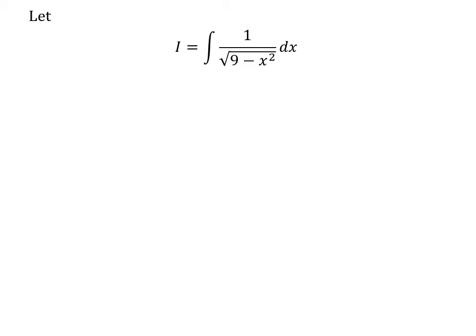Let I be equal to the integral of 1 upon square root of 9 minus square of x with respect to x. To simplify this integration, let us apply the substitution method. Assume x is equal to 3 times sine of u.